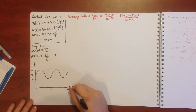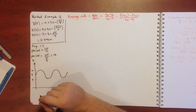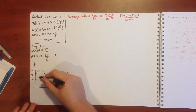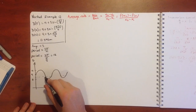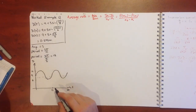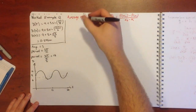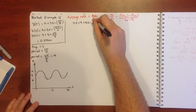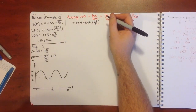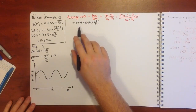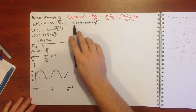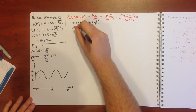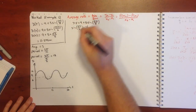Part c: find when the depth is below 7.5 metres. From the graph we can see this occurs over certain intervals. We set 7.5 equals 9 plus 3 sine(pi t on 6). Subtracting 9 gives negative 1.5, then dividing by 3 gives sine(pi t on 6) equals negative 1/2.